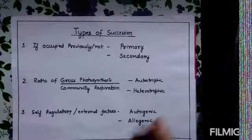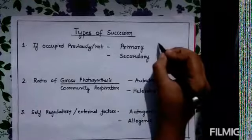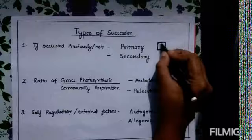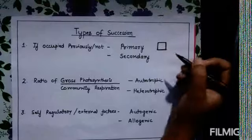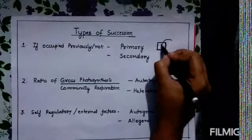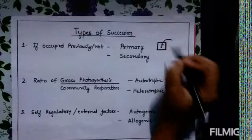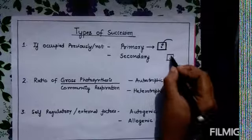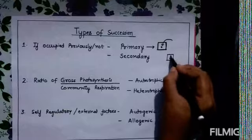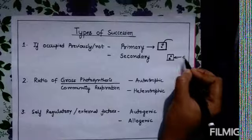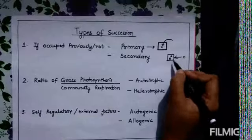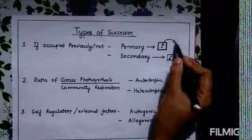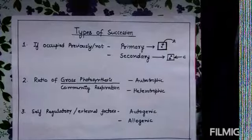We can understand these types with a simple example. If a particular area is inhabitable, not being inhabited or occupied by any species previously, and it is being colonized by certain species, then it would be termed as primary succession. But if there is another condition — say there is a presence of two different species A and B, and a new species C is occupying or inhabiting this area — then it would be termed as secondary succession, where only A or the existing species had previously inhabited this area.